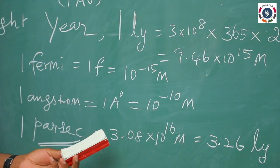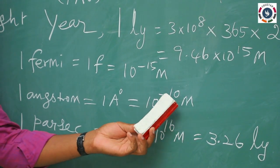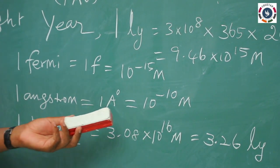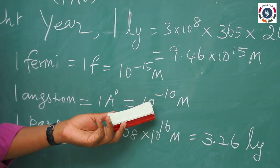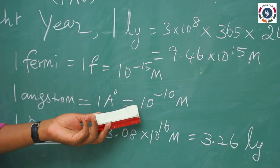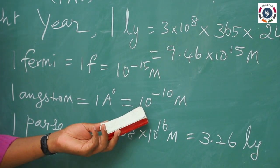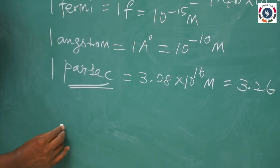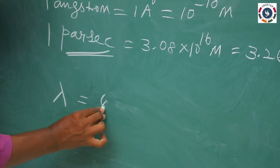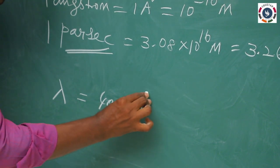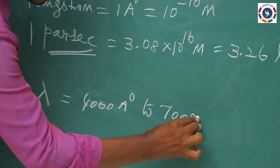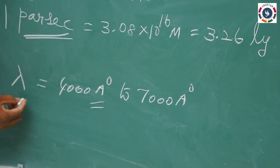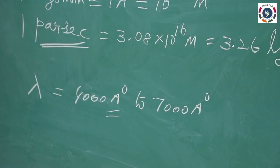Next, 1 angstrom, which equals 10⁻¹⁰ meter. This is also a unit for measuring very small values. 10⁻¹⁰ meter is normally the wavelength of waves — light waves and electromagnetic waves. For light waves, the wavelength lambda is in the range of 4000 angstrom to 7000 angstrom, which means in the order of 10⁻¹⁰ meter.